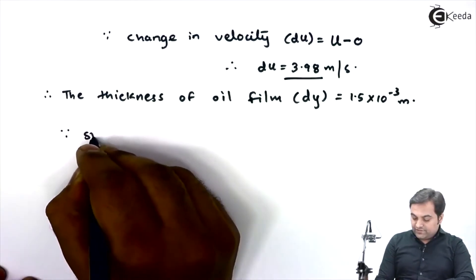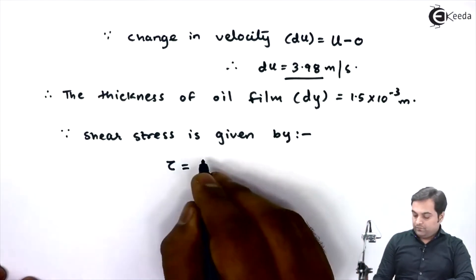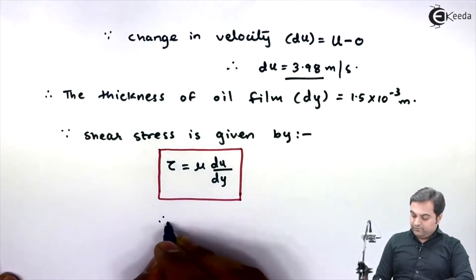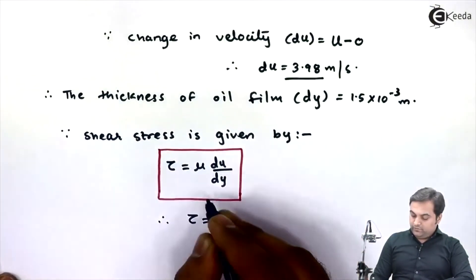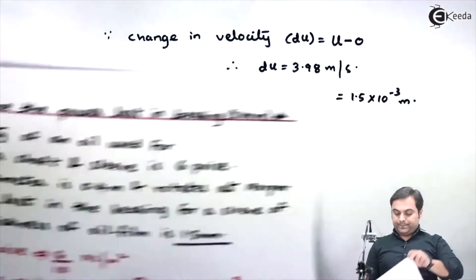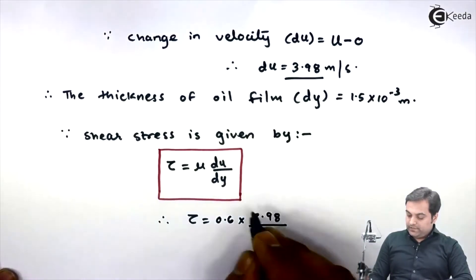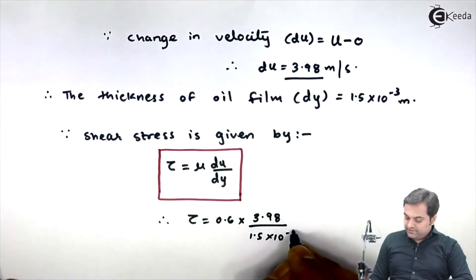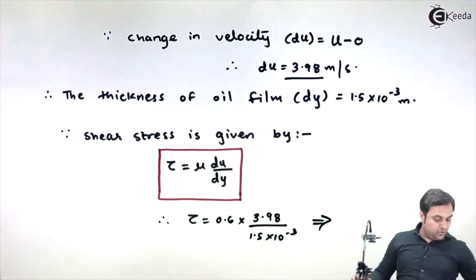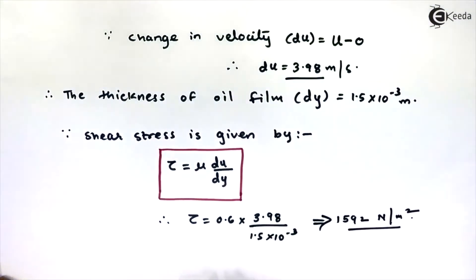After getting du and dy, I'll calculate shear stress. Shear stress is given by τ = μ × (du/dy). Therefore tau equals mu (0.6 Newton second per meter square) multiplied by du (3.98) divided by dy (1.5 × 10⁻³). Calculating this gives shear stress = 1592 Newton per meter square.